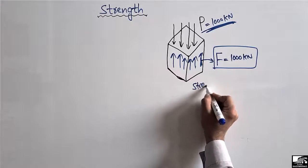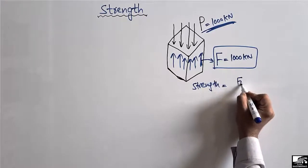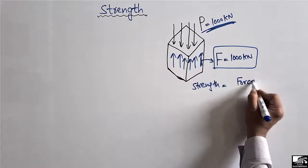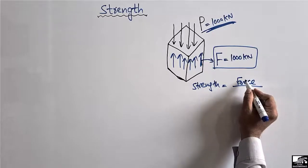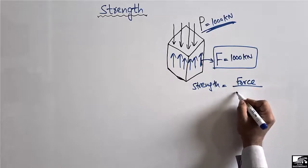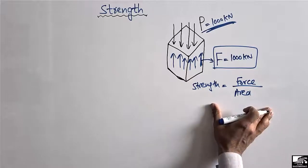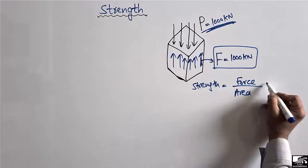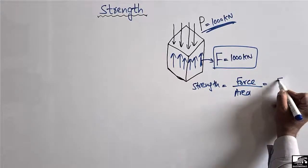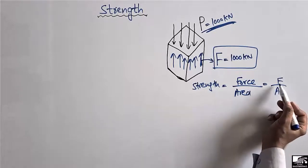Now strength can be defined as the maximum internal force the material can take, divided by the cross-sectional area of the material. This is known as the strength of the material. The force is F and the area is A.